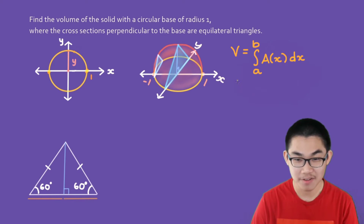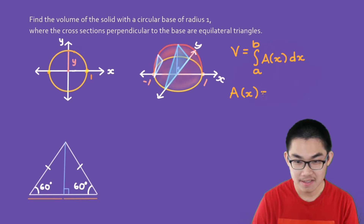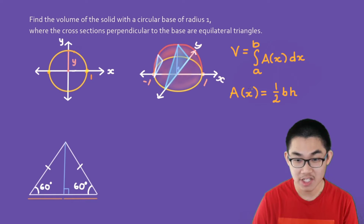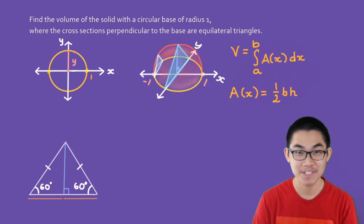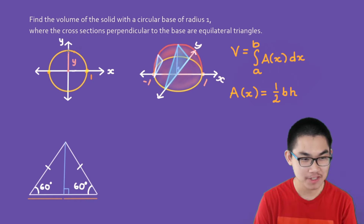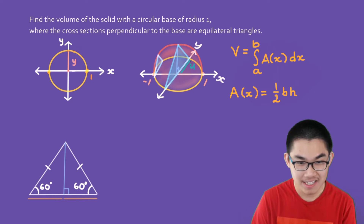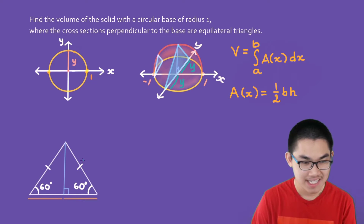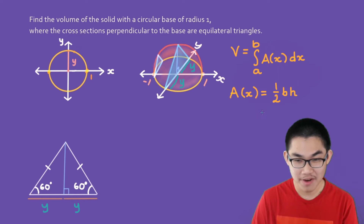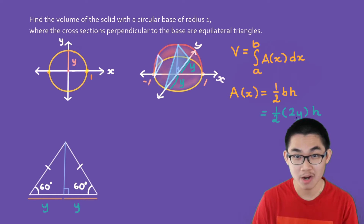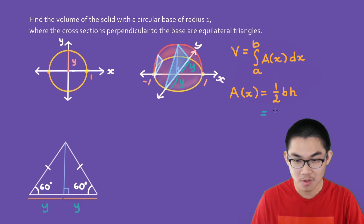We need to find the formula for the area of that triangle first. The area of a triangle is one-half times the base times the height. The distance from the x-axis to the top of the circle is y, and from the origin to the bottom is also y, so the base of the triangle is 2y. This simplifies the formula to one-half times 2y times the height, and the halves cancel, giving us simply y times the height.